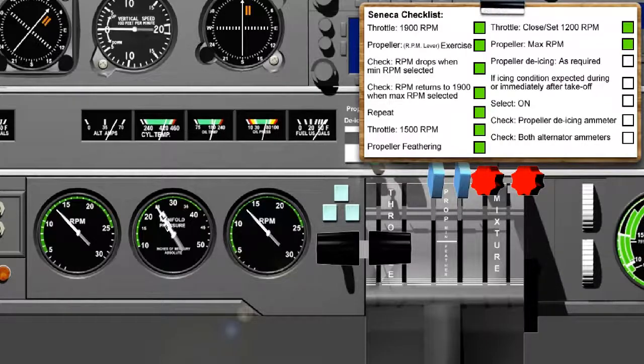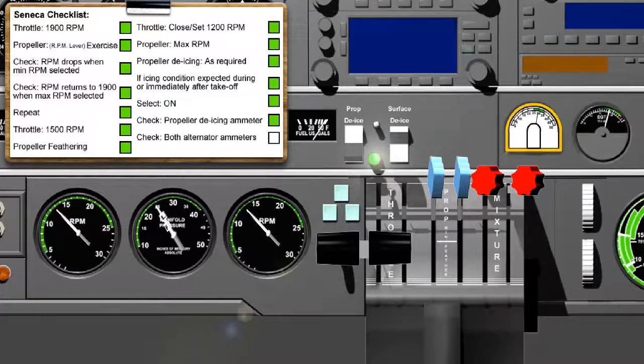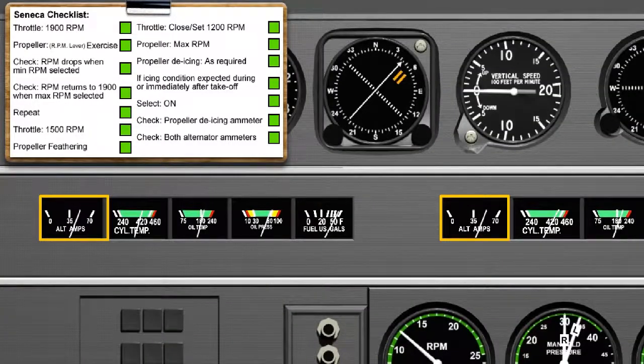Propellers, max RPM. Select the propeller control lever to the maximum RPM position. Propeller de-icing, as required. If icing conditions expected during or immediately after takeoff, select ON. Check propeller de-icing ammeter. Check both alternator ammeters.